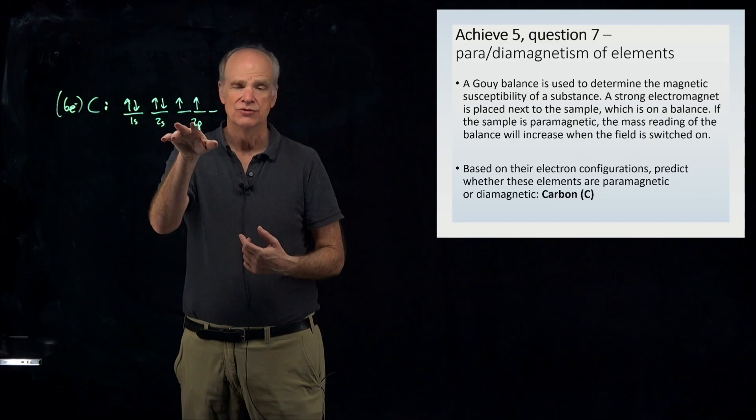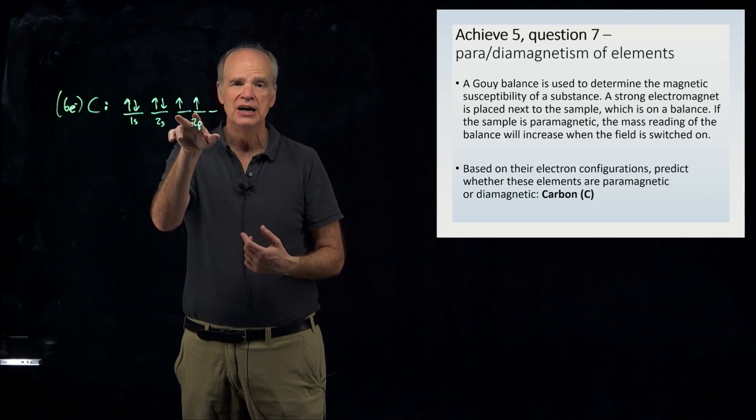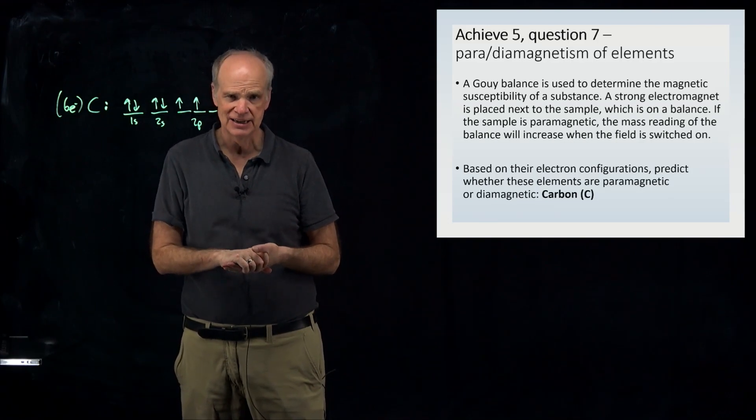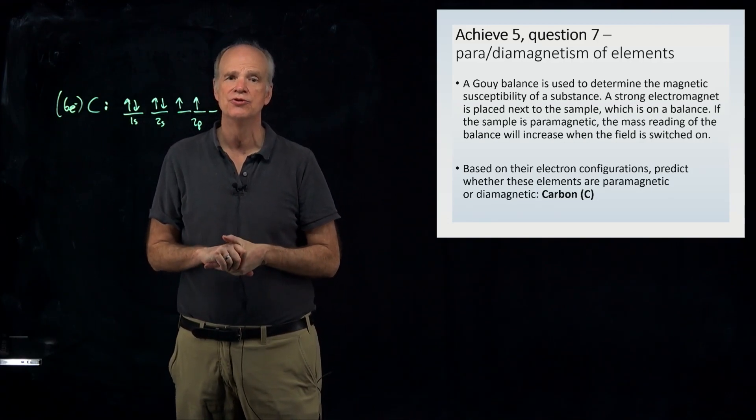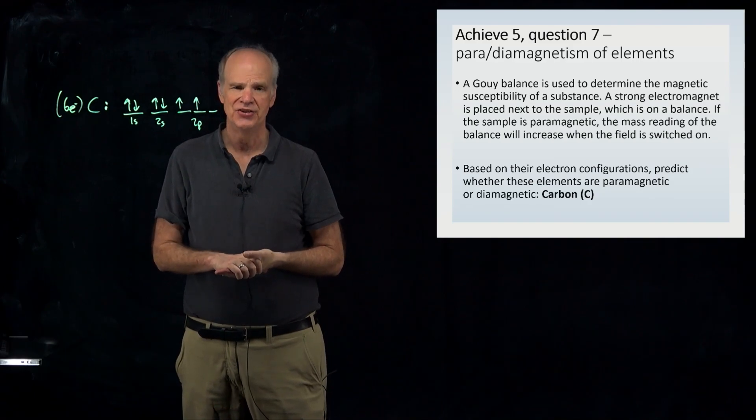But you can see that the neutral carbon atom has two unpaired electrons. Because of that, it is a paramagnetic atom and will be attracted to the poles of a magnet. That's it. Thanks for listening.